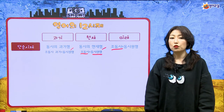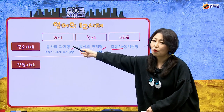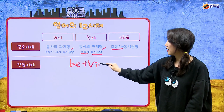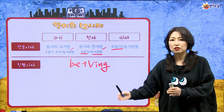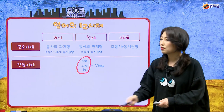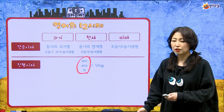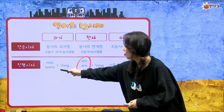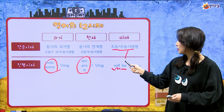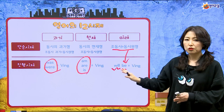그 다음에 진행 시제가 있었어요. 진행 시제도 마찬가지로 과거, 현재, 미래의 형태가 있었고요. 진행 시제의 기본 form은 be동사와 뒤에 오는 동사에 ing가 붙어서 어떤 일이나 상태가 지속적으로 이어지는 것을 표현했었죠. 이 be동사가 시제를 나타내는 거예요 — 현재인지 과거(was/were)인지 미래(will be)인지.